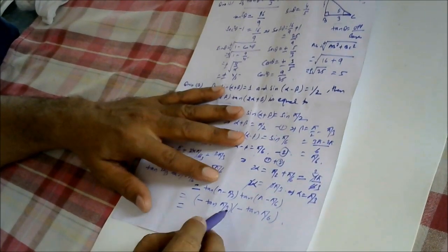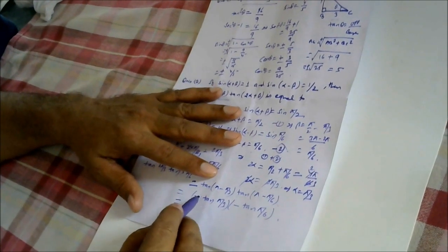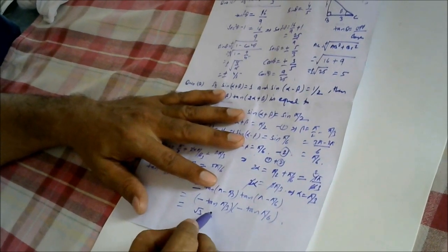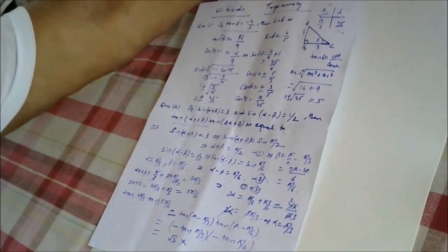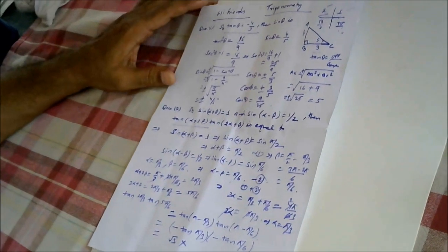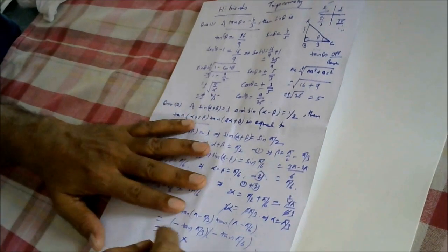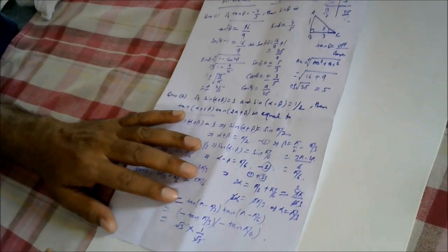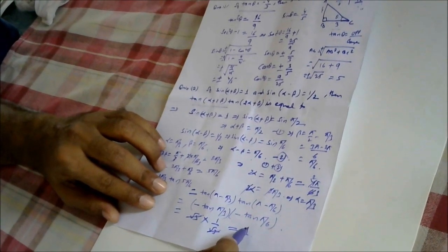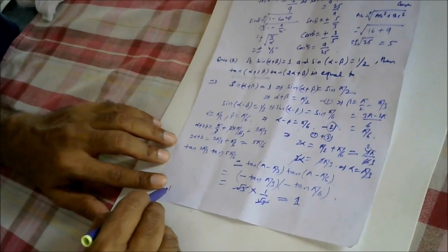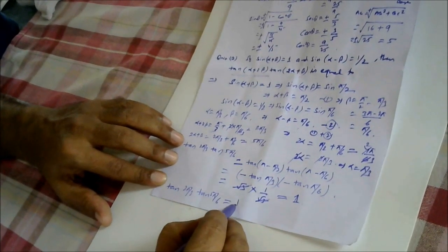Now tan(π/3) is 60° which equals root 3. And tan(π/6) is 30° which equals 1 by root 3. So the product is (−√3) × (−1/√3), and the two negatives multiply to give positive, root 3 and 1 by root 3 cancel, and we get the answer as 1. So tan(2π/3) × tan(5π/6) equals 1.